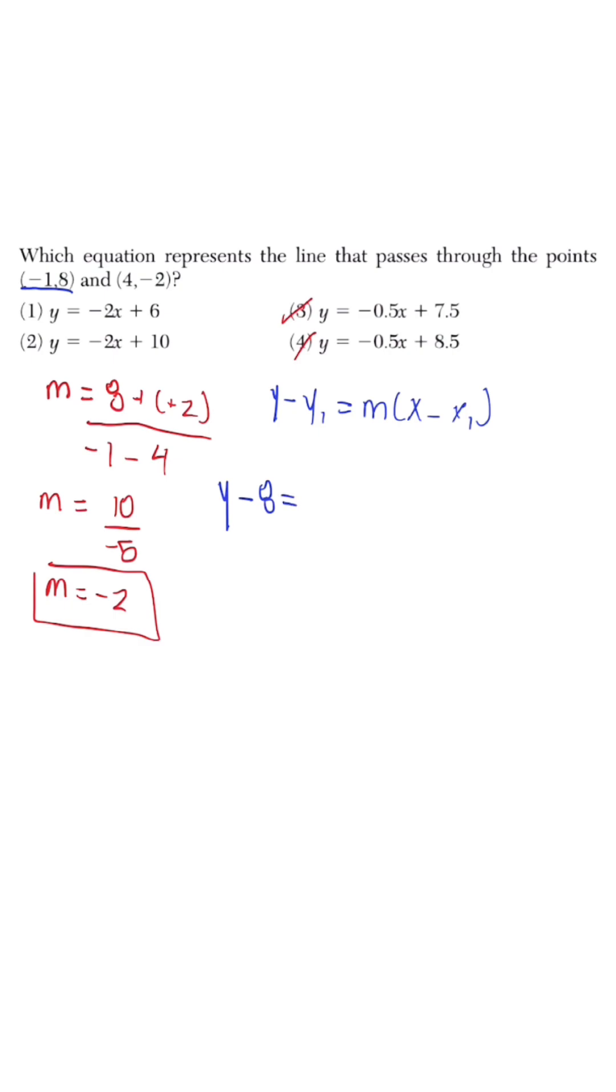So we have y minus 8 is equal to our slope negative 2 times x minus the x value, which is negative 1. So once we simplify, this is going to turn into y minus 8 is equal to negative 2x minus 2. Once we multiply 2 and positive 1, we'll get that negative 2.